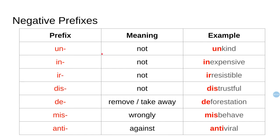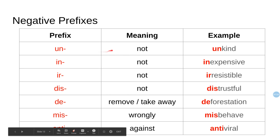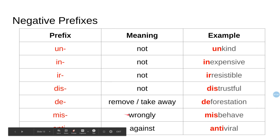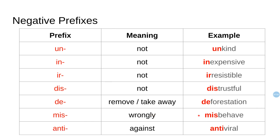To recap: 'un-' means not, like unkind — not kind. 'In-' means not, like inexpensive — not expensive. 'Ir-' means not, like irresistible — not resistible. 'Dis-' means not, like distrustful — not trustful. 'De-' means remove or take away, like deforestation — take away the forest. 'Mis-' means wrongly or badly, like misbehave — behave wrongly. And 'anti-' means against, like antiviral — against viruses.